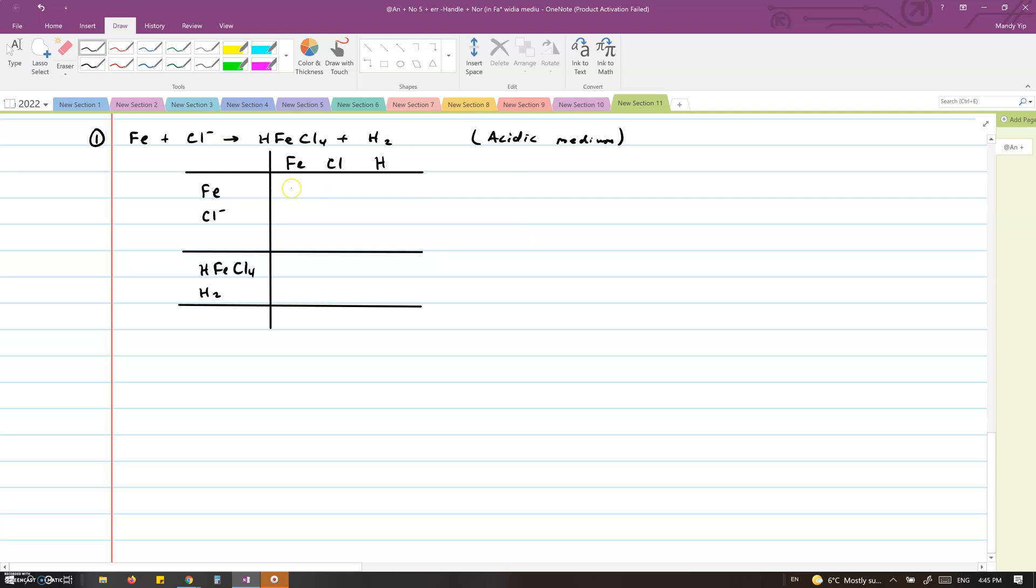So we will fill in the table with the oxidation numbers as usual. Each Cl is minus 1, and we have four of them, so that gives us minus 4, plus 1 from the hydrogen, that will give us minus 3. So Fe must be plus 3.